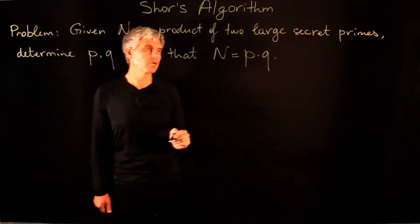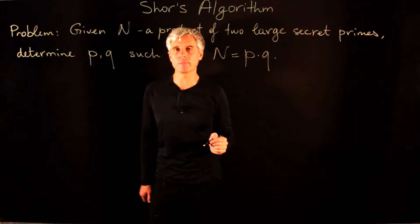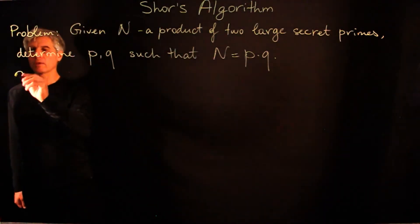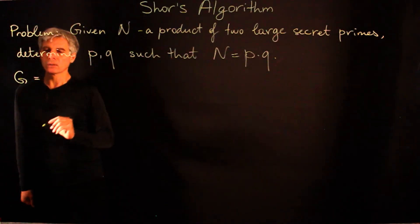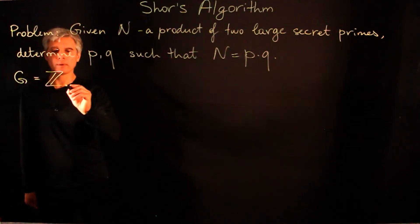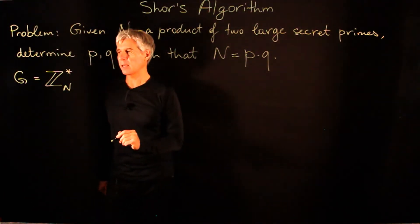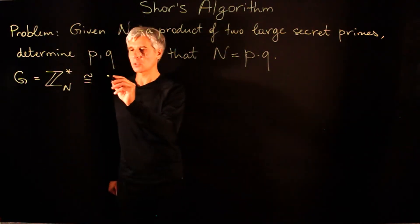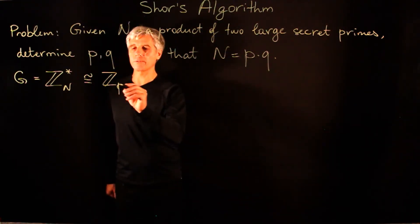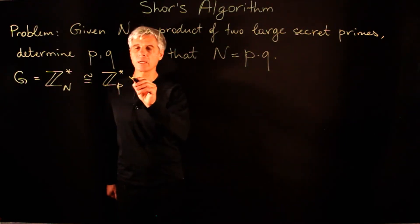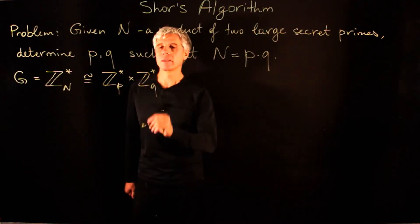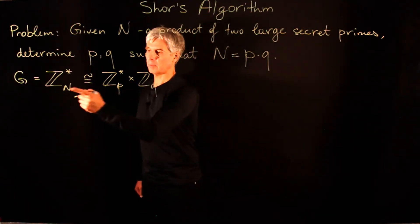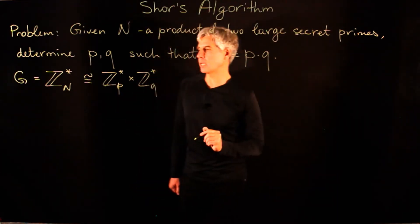So we're given the product of two primes, and we need to determine the primes. We are going to use group theory to do this. We consider the group of multiplicative remainders mod n, and we know that this group is isomorphic to the product of Z_p multiplicative and Z_q multiplicative. Of course, this factorization is not known to us because to have it, we need to know p and q.